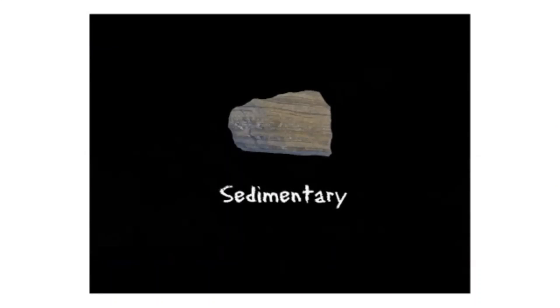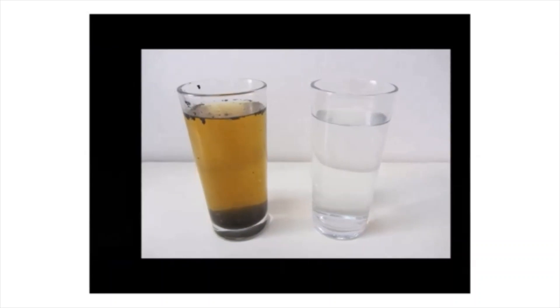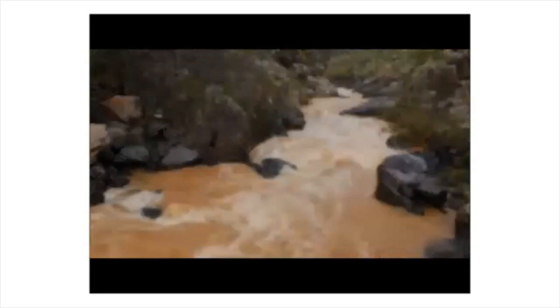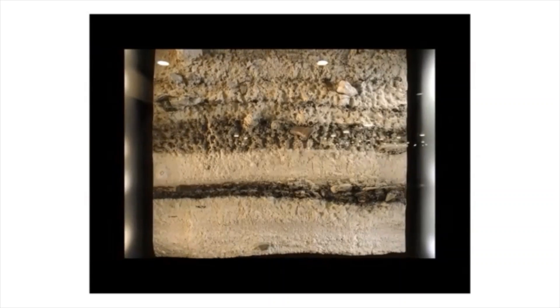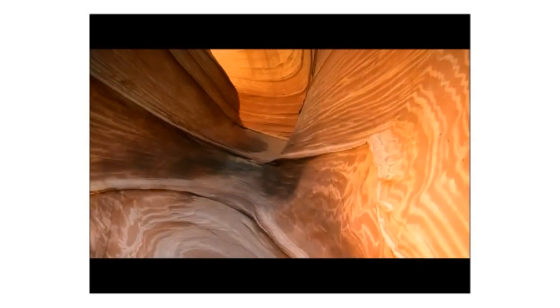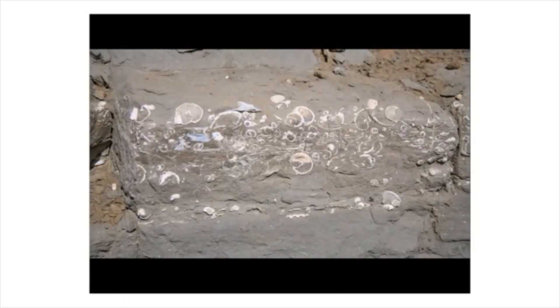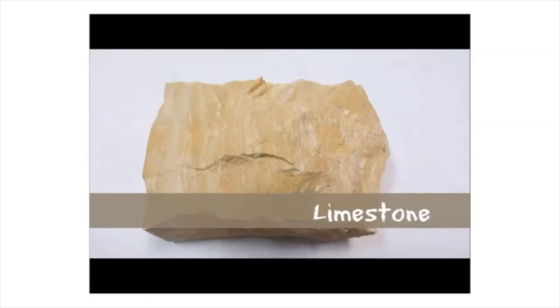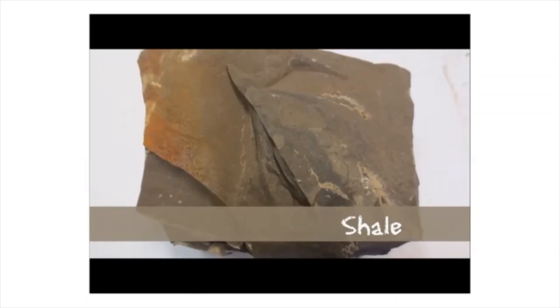The next type is sedimentary rock. Sediment is small particles of sand, mud, and organic material that settle to the bottom of water or land areas, often lakes or oceans. Sedimentary rocks form when sediment accumulates over time in layers that become squeezed and compressed until they consolidate into rock. Sedimentary rocks are the types in which fossils may be found, since the formation process can preserve plant and animal remains. Examples include limestone, shale, and sandstone.